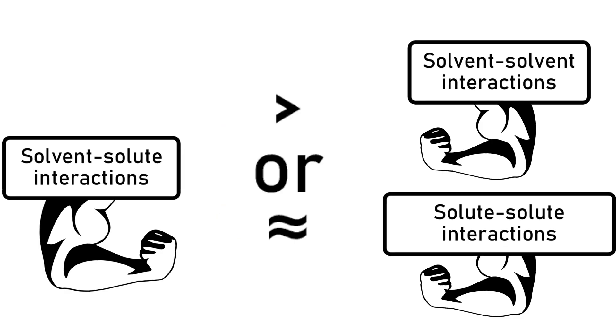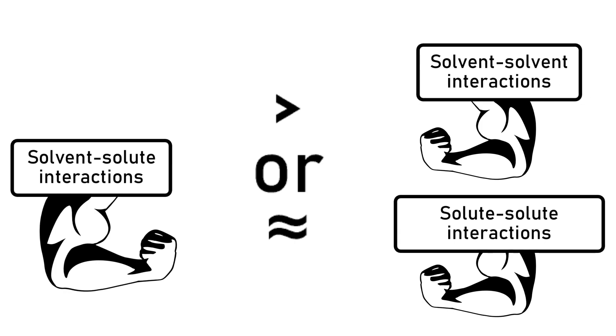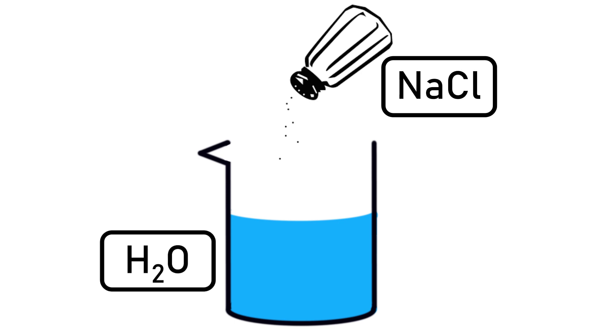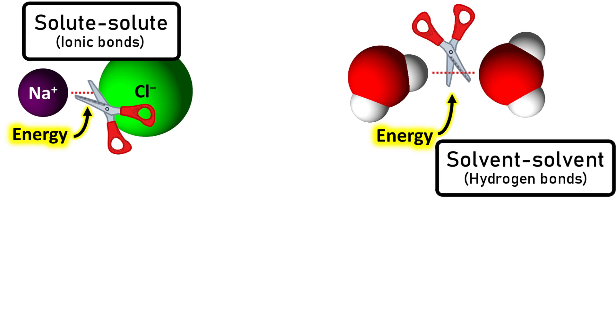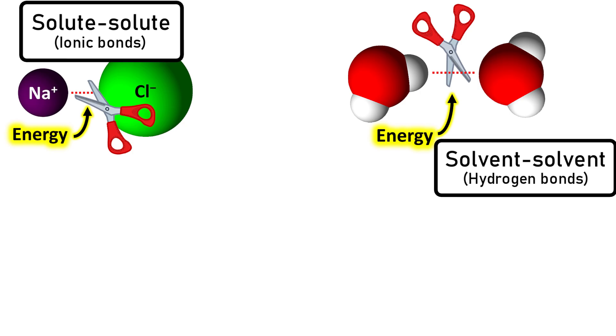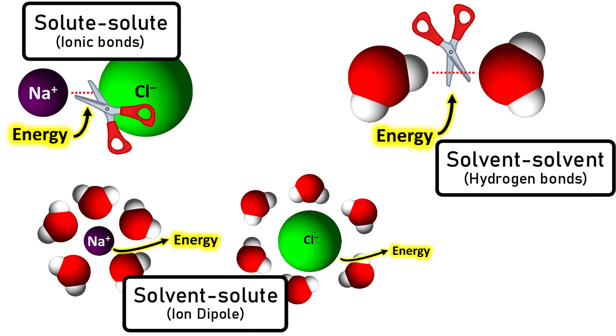If the solvent-solute interactions are stronger than or comparable to the solute-solute and solvent-solvent interactions, then the solute will dissolve and a solution will form. For instance, when sodium chloride is added to water, the ionic bonds between sodium and chloride ions must be broken, and some hydrogen bonds between water molecules must also be broken — both requiring energy. But the solvent-solute interactions are ion-dipole forces, which are strong and release a large amount of energy, making sodium chloride quite soluble in water.